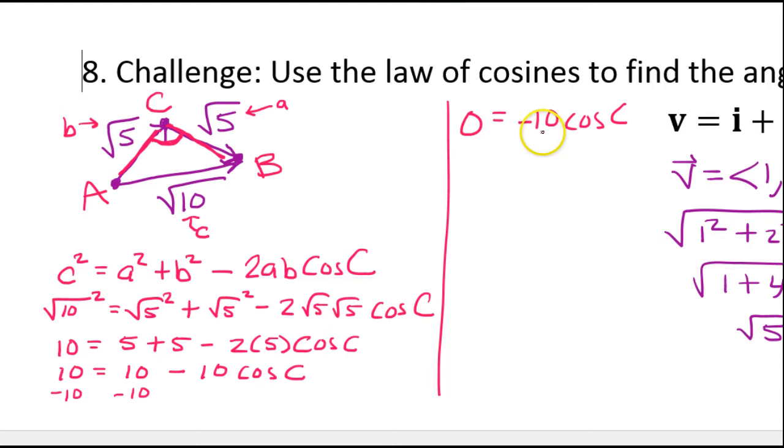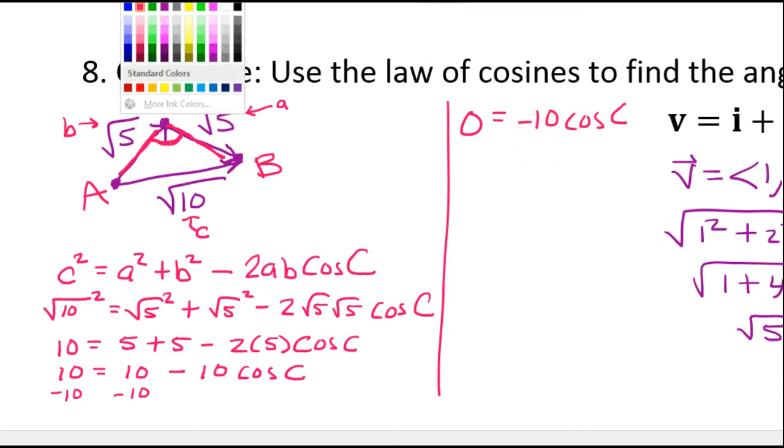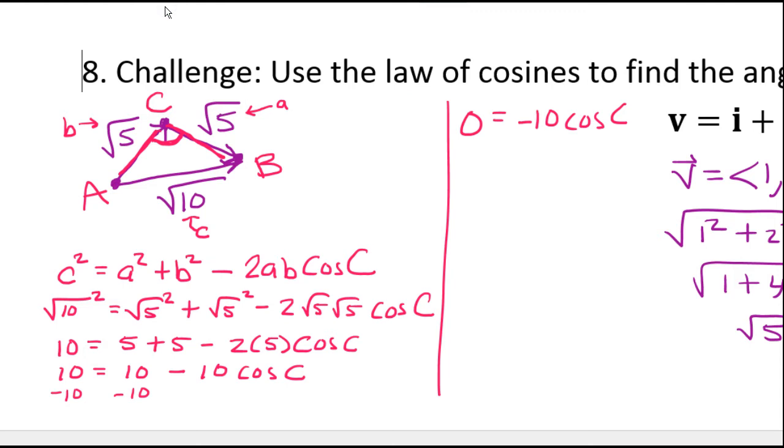Now I would divide both sides by negative 10. So if I come through here and I divide by negative 10 on both sides. 0 divided by negative 10 is still 0. The negative 10s cancel out. So 0 = cos(c). So I don't need a calculator for this. What angle has a cosine of 0?